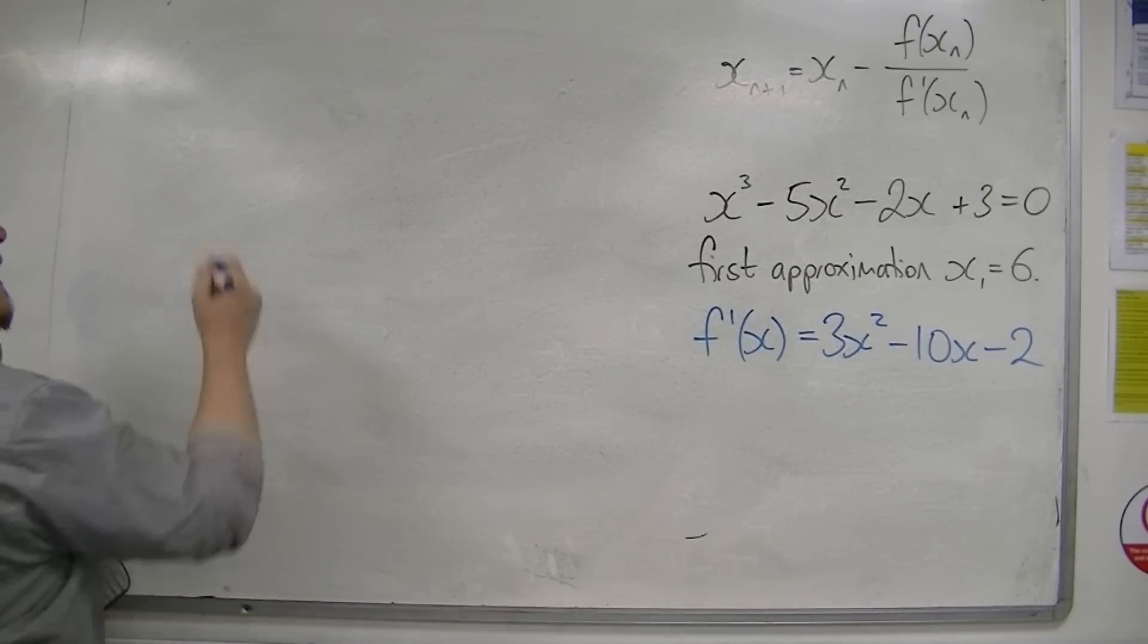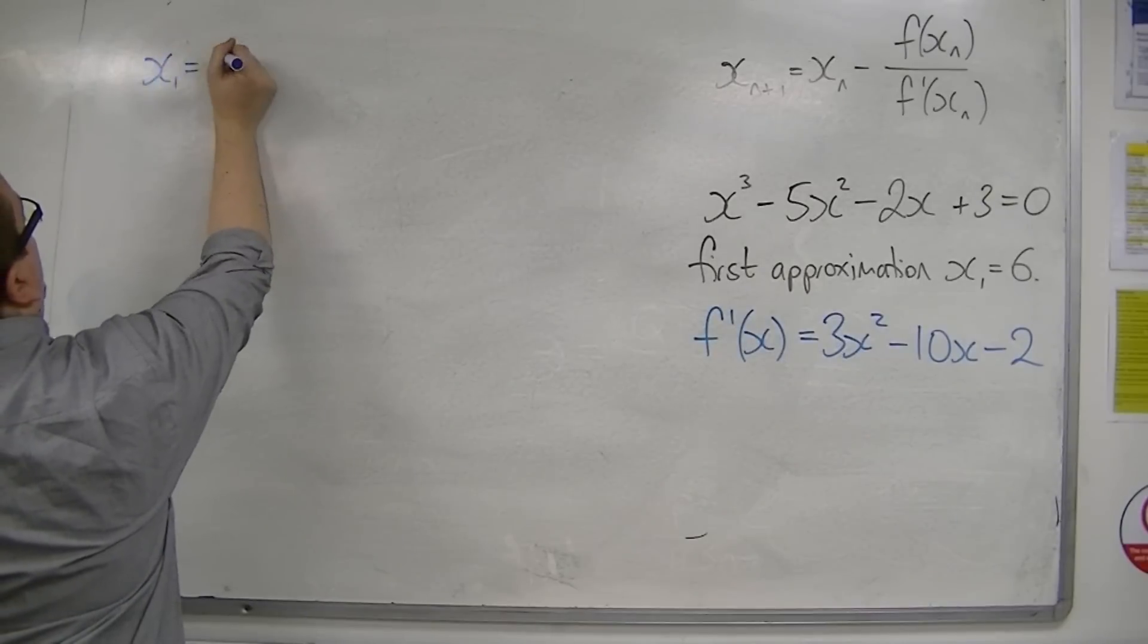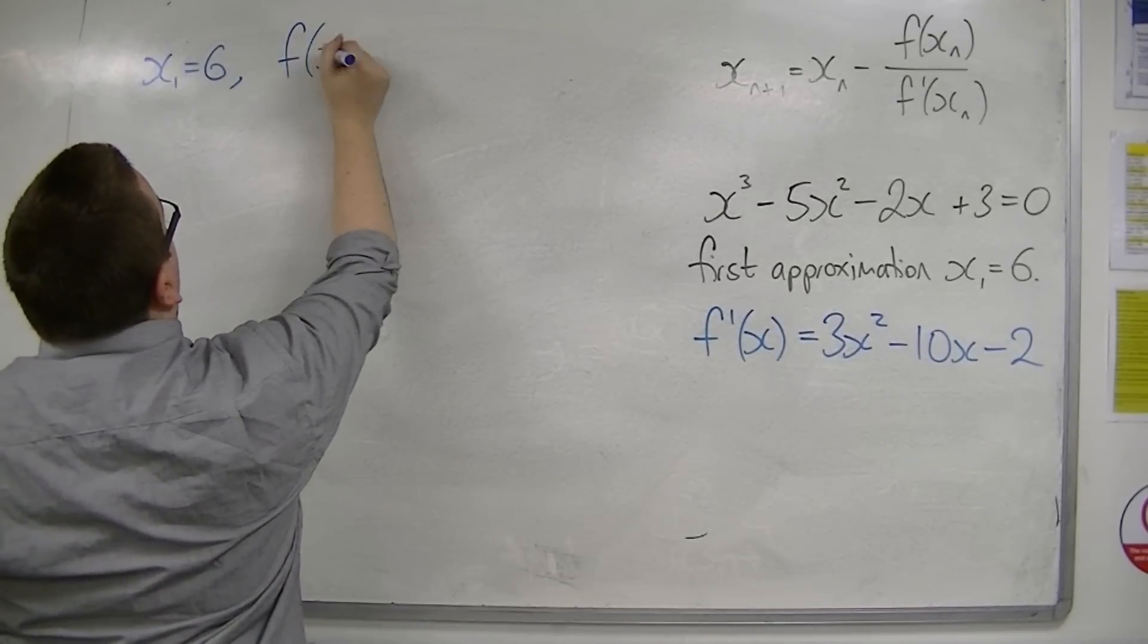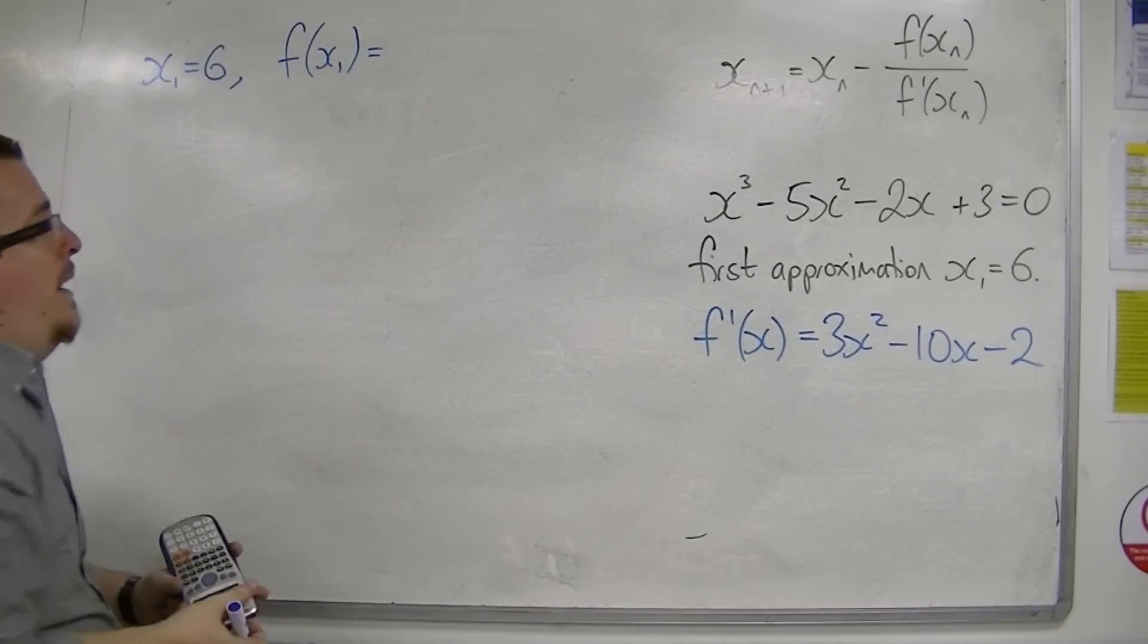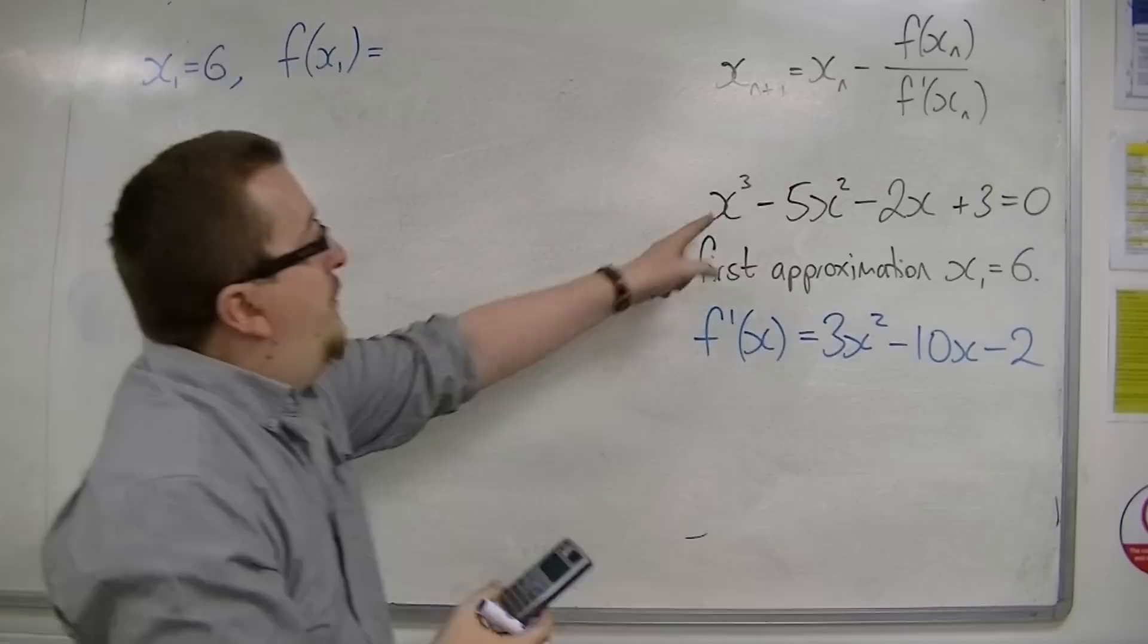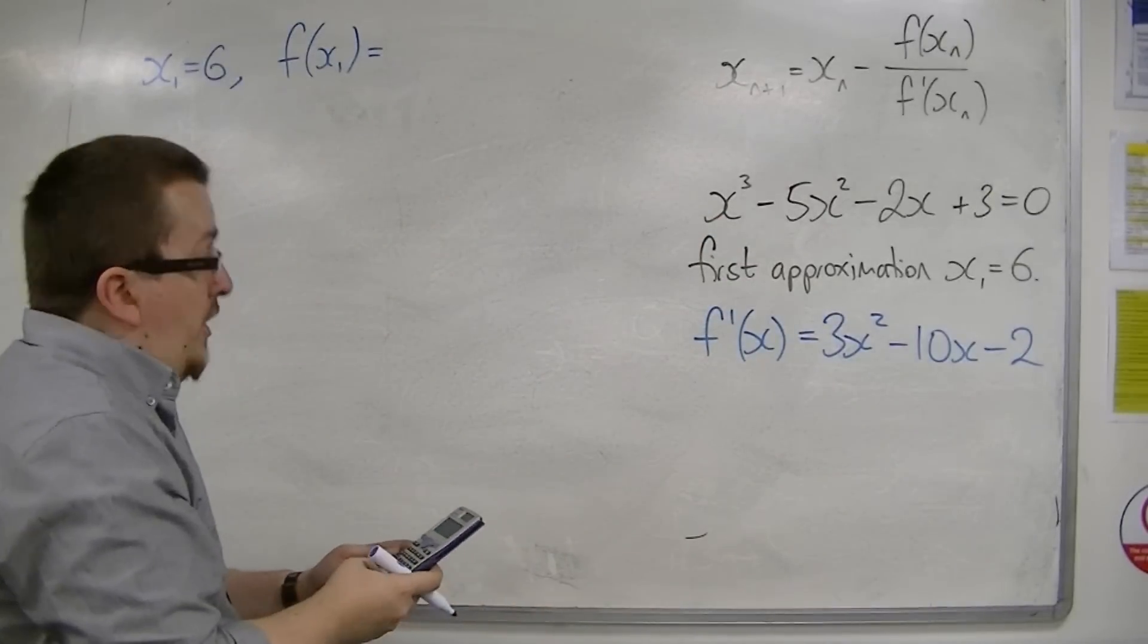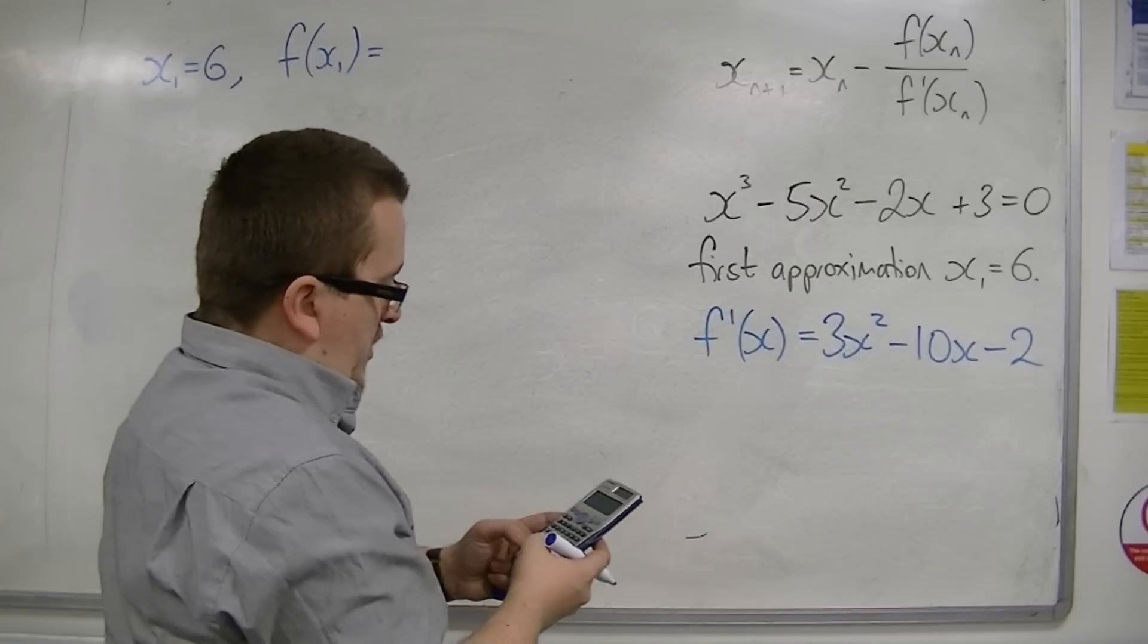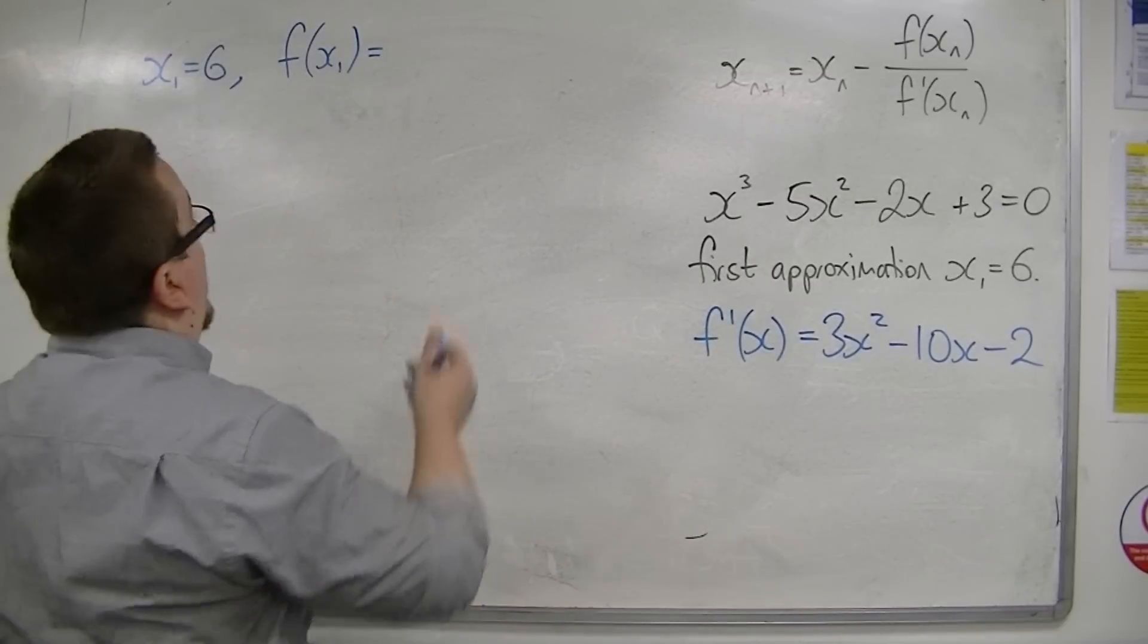So if we've got x1 is 6, I need f of x1. So f of 6. So I substitute 6 into this. We've got 6 cubed, take away 5 times 6 squared, take away 2 times 6 plus 3 is 27.